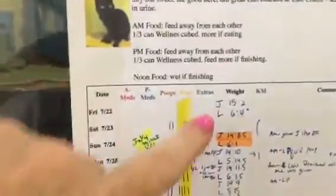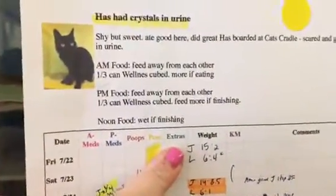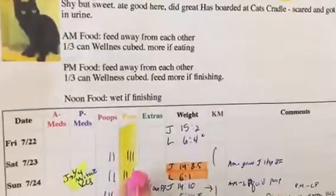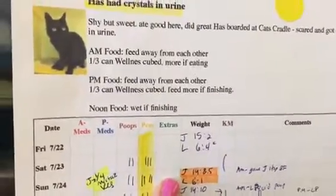Weight update on Jojo. Jojo checked in at 15 pounds 2 ounces. A couple days later, dropped to 14 pounds 8.5 ounces.